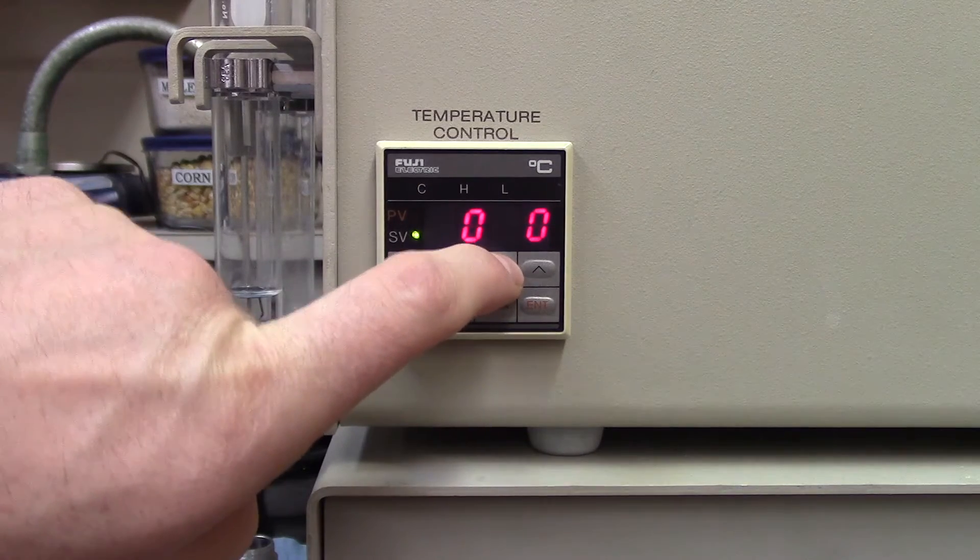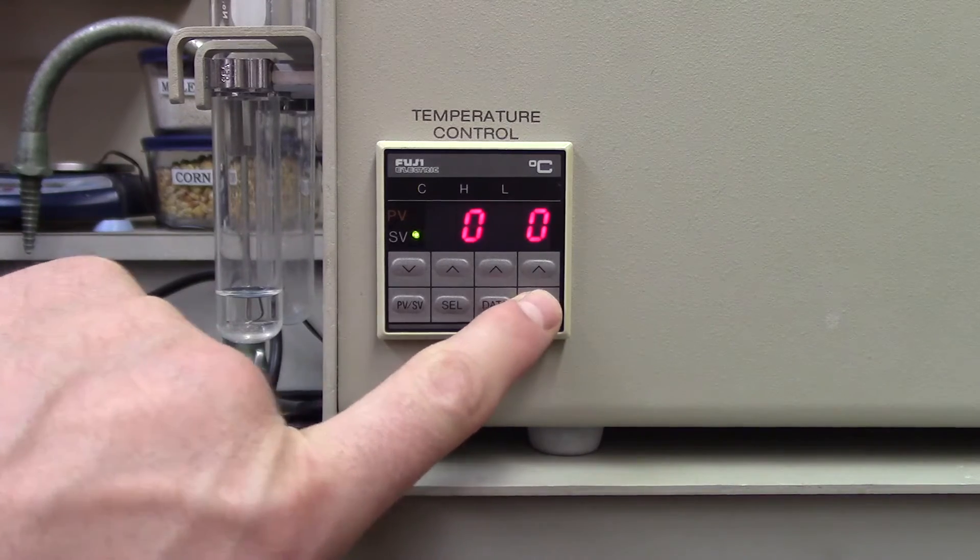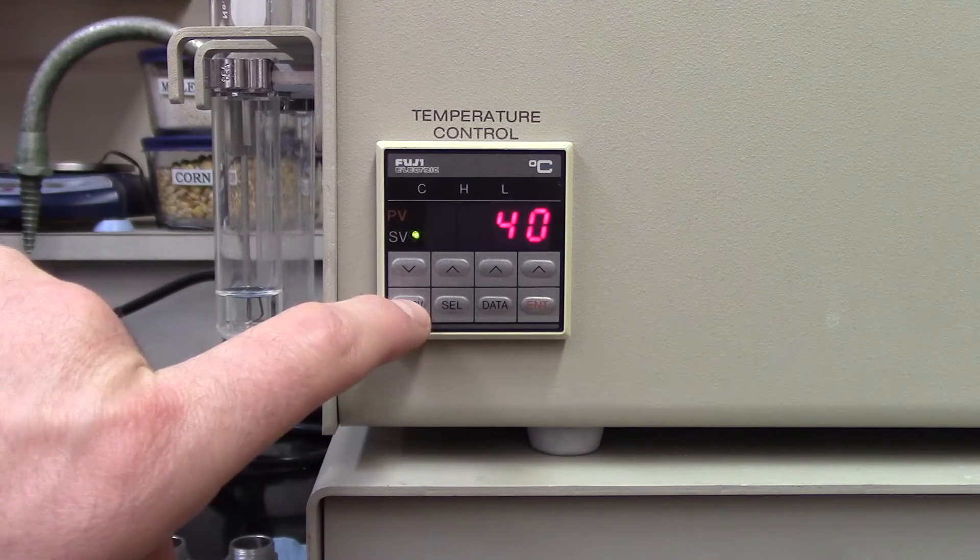When you have the correct temperature, press enter. Then click the PV-SV button again, so the red light is displayed next to the PV, which allows you to see the current temperature inside the chamber.